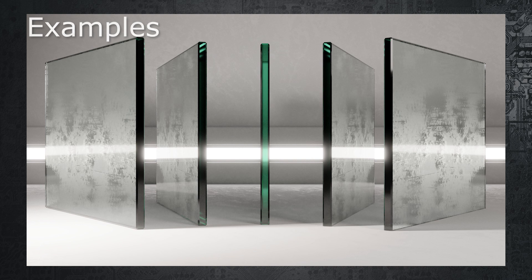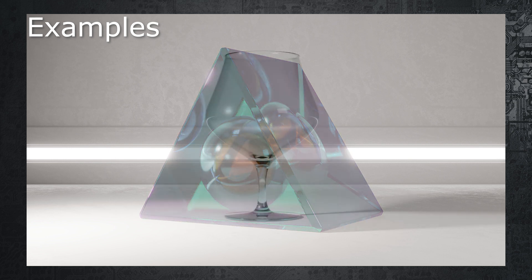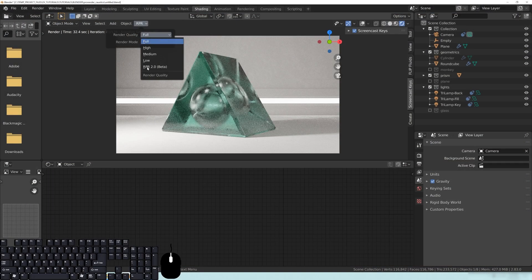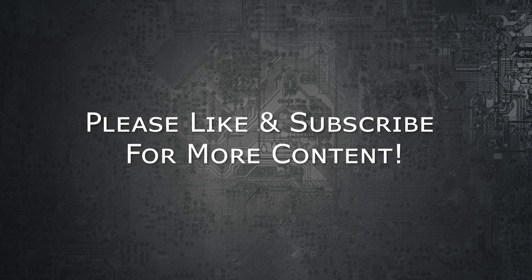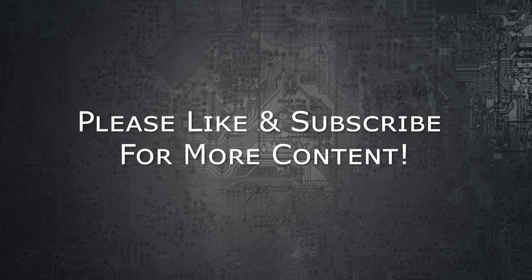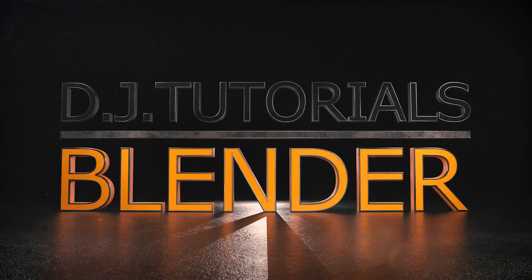That's basically going to be it for this tutorial. I really just wanted to take the time to explain how the shading and materials work. Just FYI, I am using a development build. Everything I'm talking about works in RPR 1.0 — when selecting render settings, make sure you're on Full. This is not going to work on 2.0 because volumetrics are not supported yet and it's a bit buggy. Full works just fine and you can get some really beautiful renders. If you have more questions or want me to go over anything in more detail regarding glass shading, please leave a comment below. See you guys next time on DJ Tutorials.